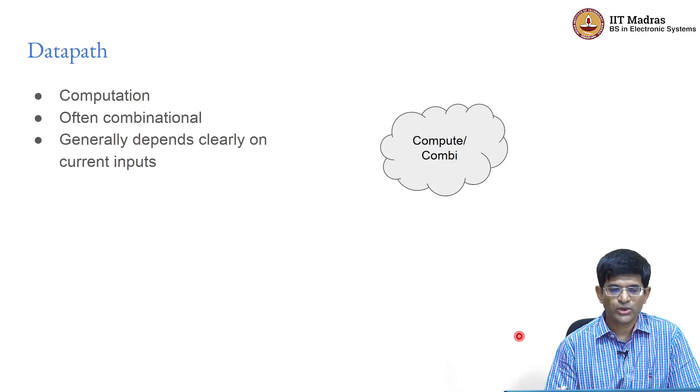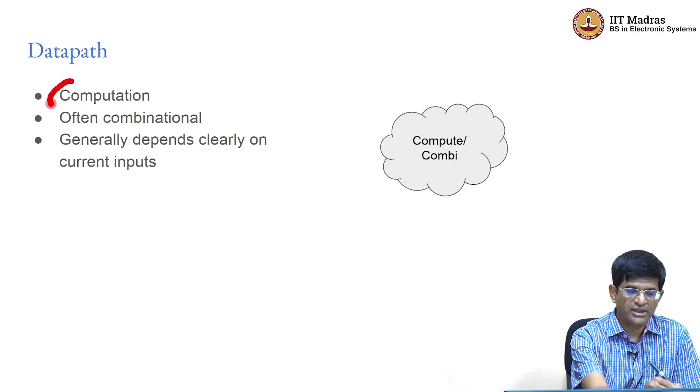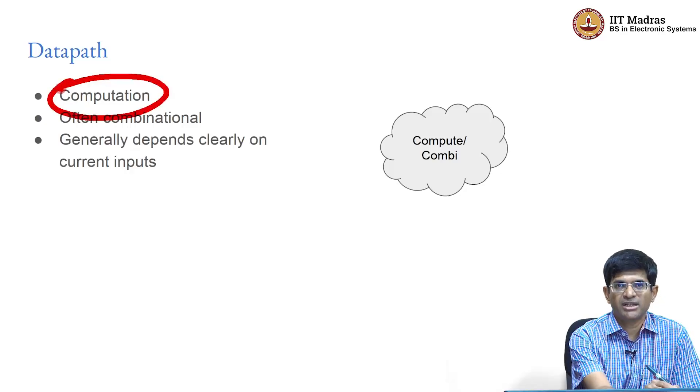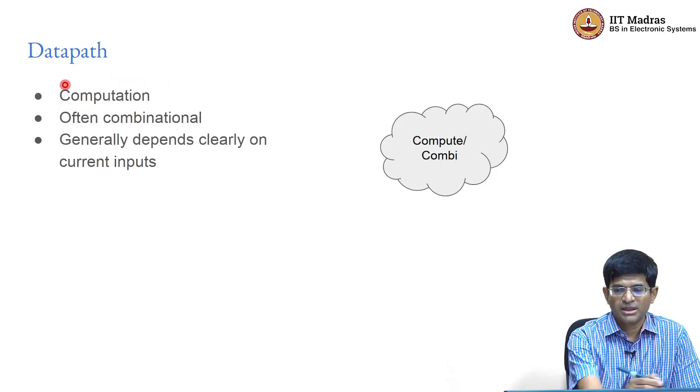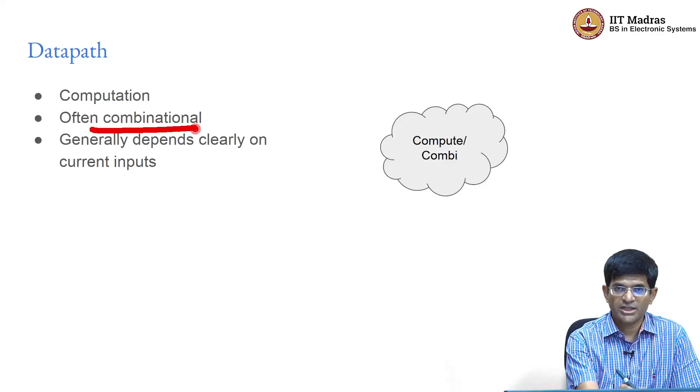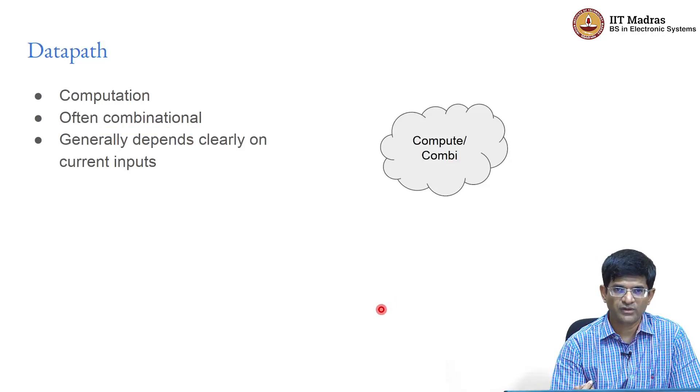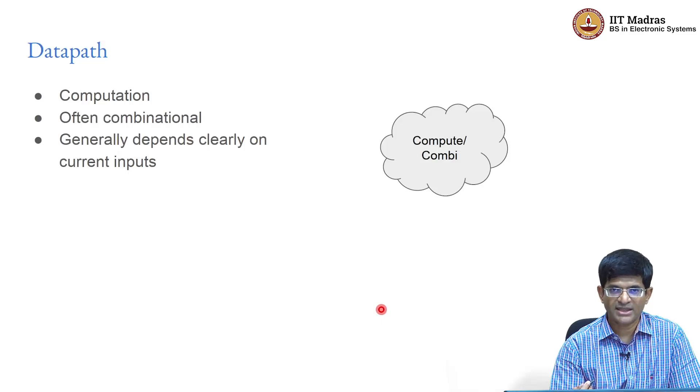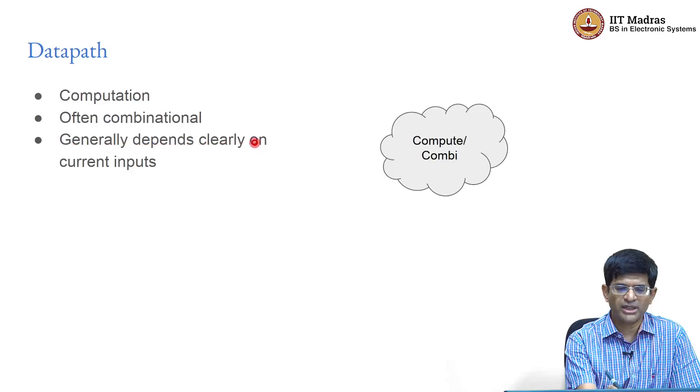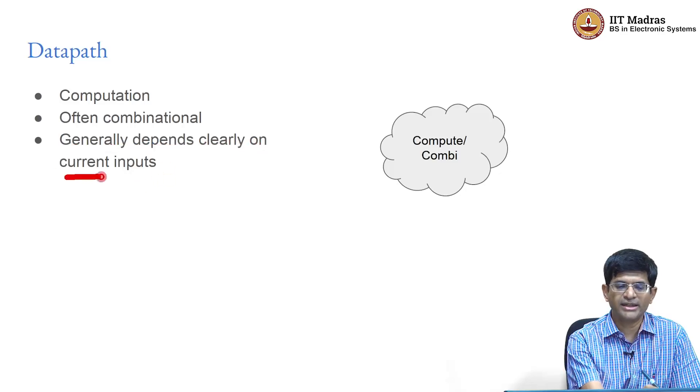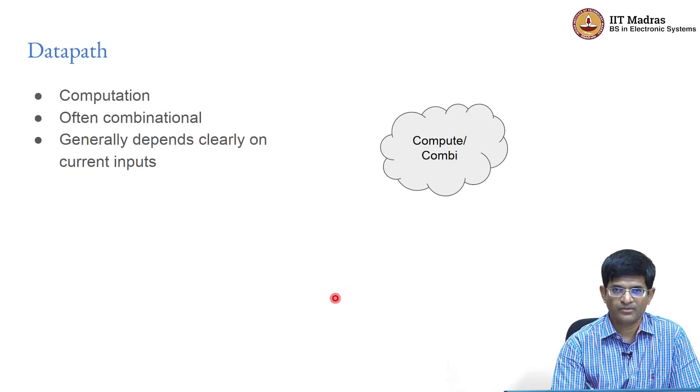The data path is usually a term used to refer to the computation being performed by a piece of digital logic. It is often combinational, though you might have some parts of the computation with sequential elements in it. But in general the output clearly depends on the current inputs and nothing else.